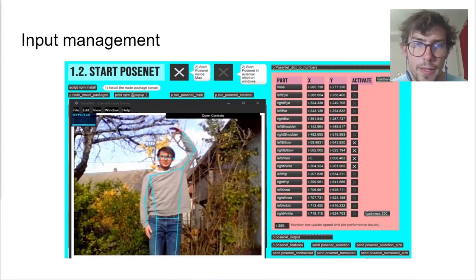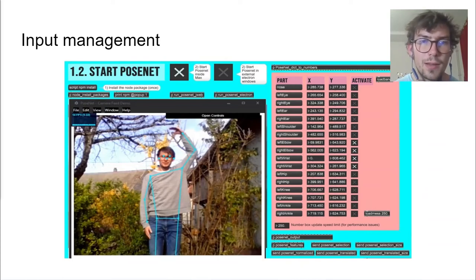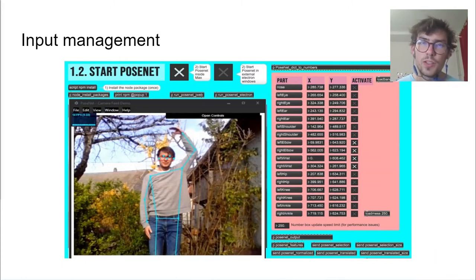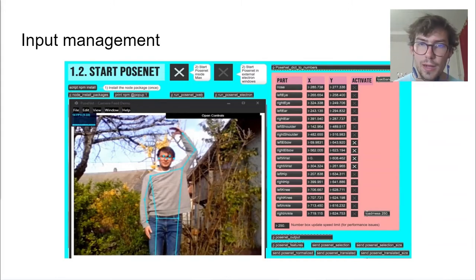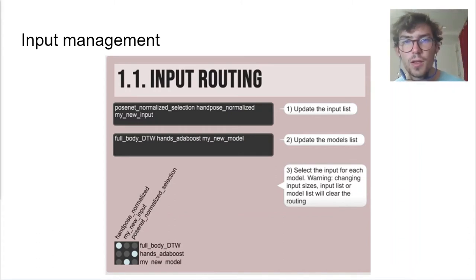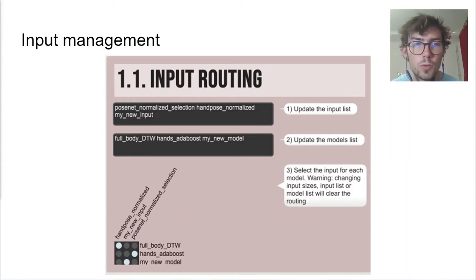About the input management layer: the program comes with two built-in inputs, PoseNet and HandPose, which are skeleton-like pose estimation models for a single person's body and hands. They only require the use of one or two webcams. From their raw data, we can compute translation and rotation invariant features by taking only the most relevant data points and normalizing them with respect to body height and shoulder width. Users can also implement their own inputs, as no assumption is made on the size of the feature vectors nor on the number of inputs. Once all inputs are set up, the user can route features to the different classification models.